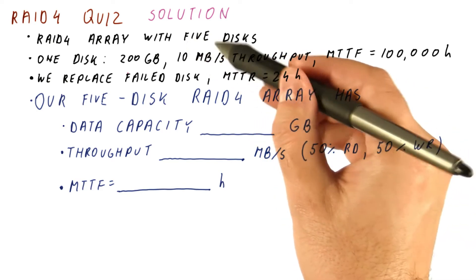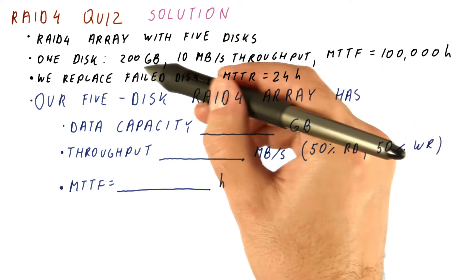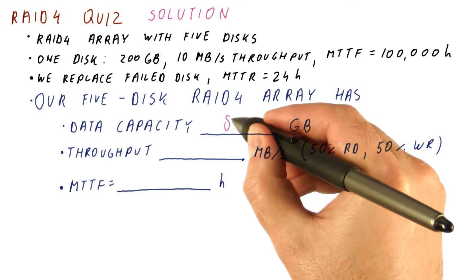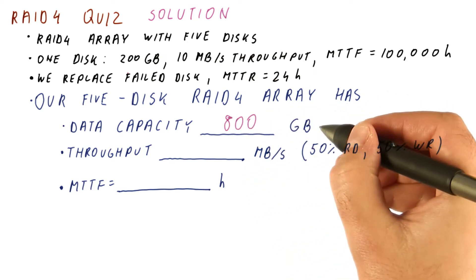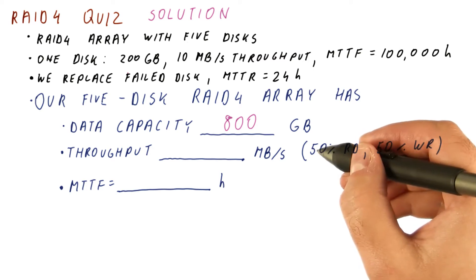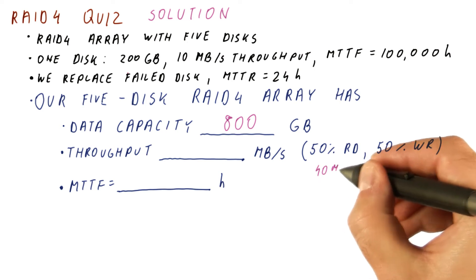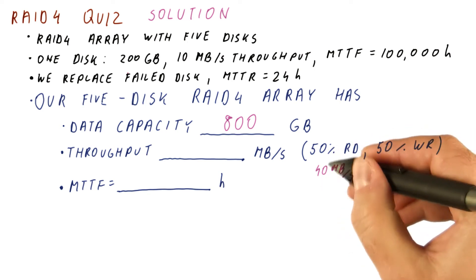So among the five disks, one is parity, the other ones contain data, so we have four times this much, which is 800 gigabytes. The throughput of the array for reads is going to be the throughput of the four data disks. So we have 40 megabytes per second throughput for reads.